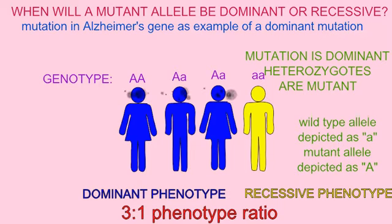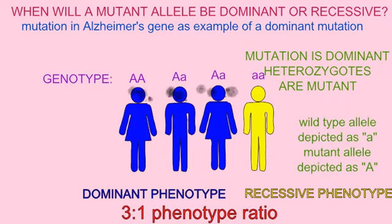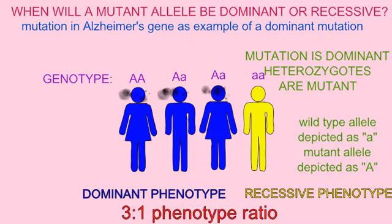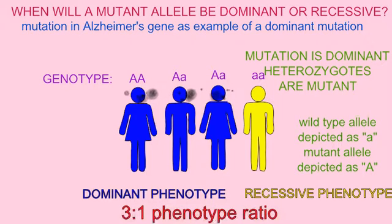So, in this case, an individual who is heterozygous — even though a normal allele is present — the abnormal mutant allele will nevertheless affect phenotype. The heterozygote will have the mutant phenotype of a predisposition to Alzheimer's disease, and therefore this mutation will be classified as dominant.